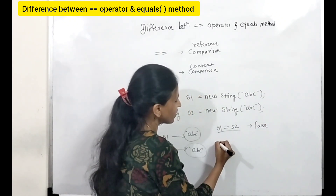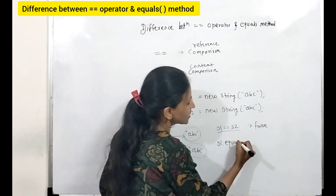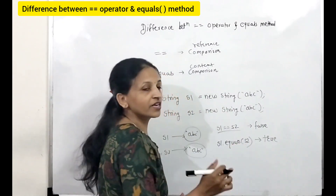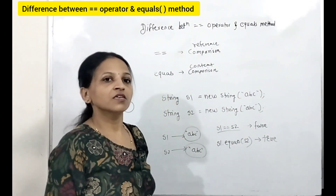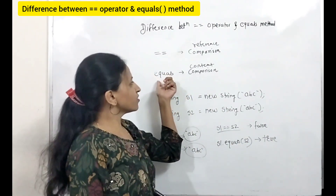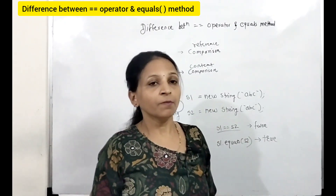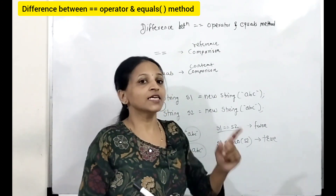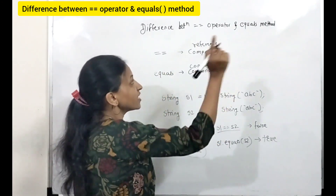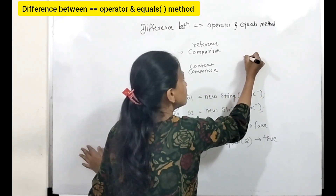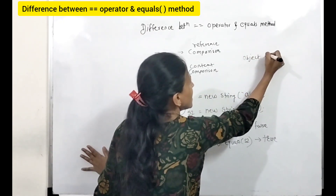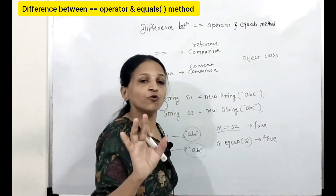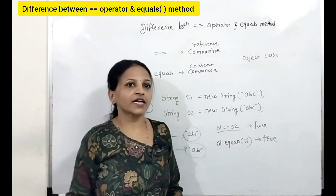And if we check whether s1.equals(s2), then it will return true, of course, because this is for content comparison. Now, this equals method is actually present in the Object class, but in Object class it is for reference comparison only. If you are considering the Object class directly, there is no difference between the equality operator and equals method — both compare references.